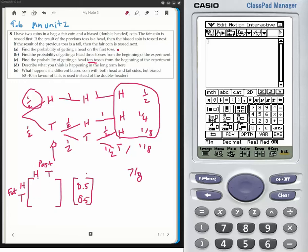If I get a head, then I must toss the unfair coin, which means that probability is going to be one. There's no chance I can get a tail if I toss a head, because if I toss a head, I then toss the biased coin. If I toss a tail, then I toss the fair coin, so that's 0.5 and 0.5.